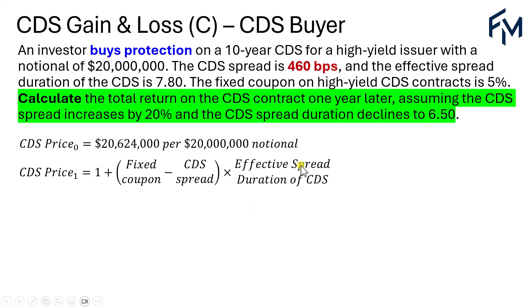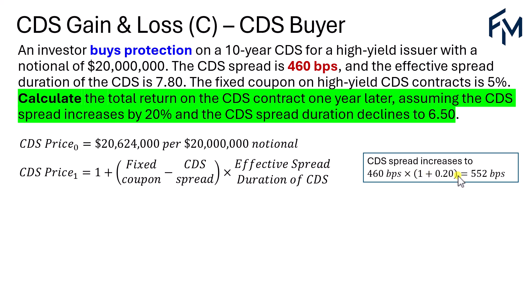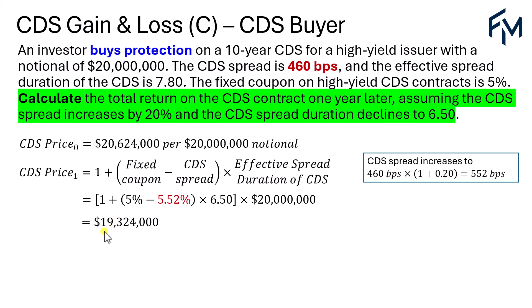Moving on — let's fast forward to one year later. We need to calculate the total return on the CDS contract one year later, assuming the CDS spread increases by 20% (a proportionate increase), and the CDS spread duration declines to 6.5 after one year. Starting from the initial price at time zero, the new CDS spread is 460 basis points times 1.20, giving 552 basis points or 5.52%. With effective spread duration of 6.5, the CDS price is $19,324,000.